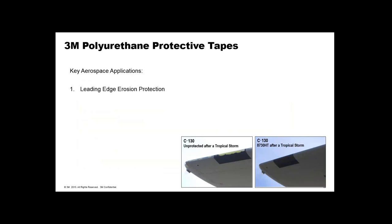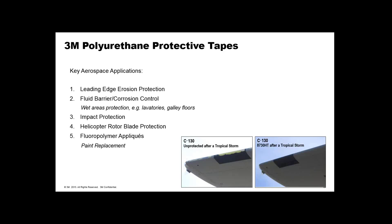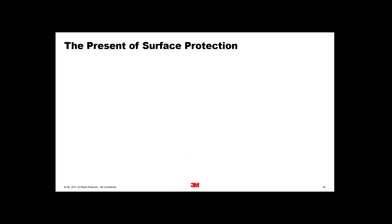The major application is protection of leading edges. You can see a before-and-after of a C-130 that flew through a tropical storm. The picture on the right is protected with tape — the black area is the tape — whereas the unprotected picture on the left shows the storm has taken away at least the top coat, revealing the yellow primer, and in some areas the primer has been taken away as well. Other applications include fluid barrier control for aircraft interiors, impact protection, helicopter rotor protection, fluoropolymer appliqué as paint replacement, and moulded boots.